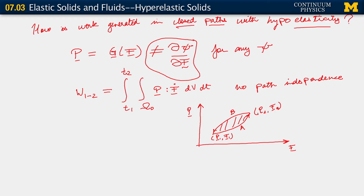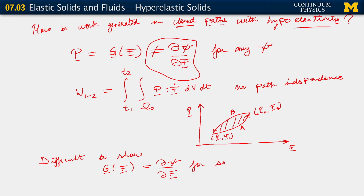Mathematically, the reason this happens is that in general it is difficult — given a G(F) — to show that G(F) equals the partial of psi with respect to F for some psi. You can go the other way: if you start out with a psi, then differentiate it with respect to F you get a G — that is assured. But if you go the other way around, you're not assured of this. In general, if you were to construct some function G and try to show that it can be written as partial of psi with respect to F, you will find that that's actually difficult for a non-linear tensor function.